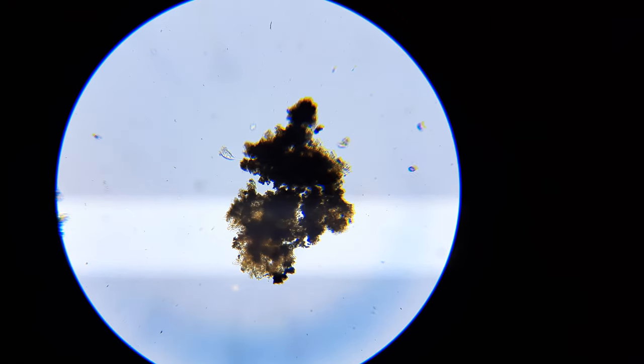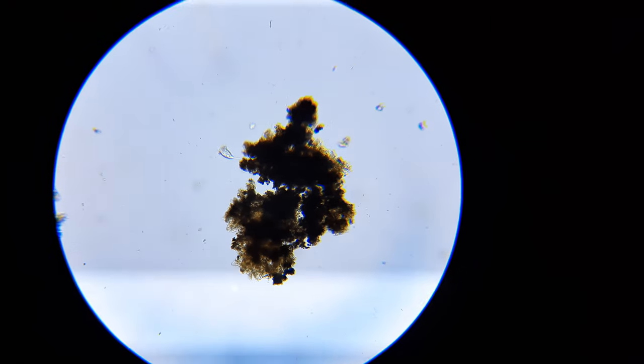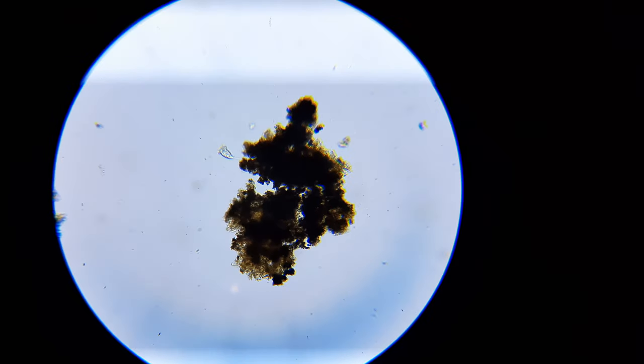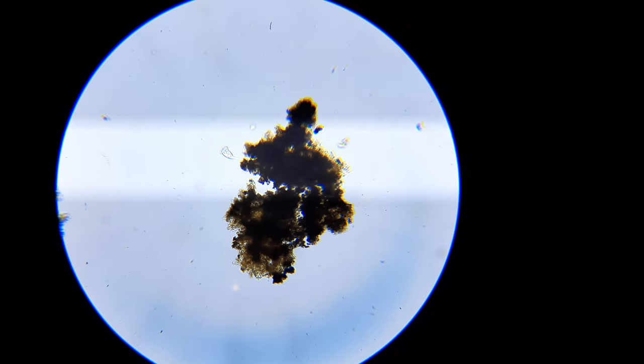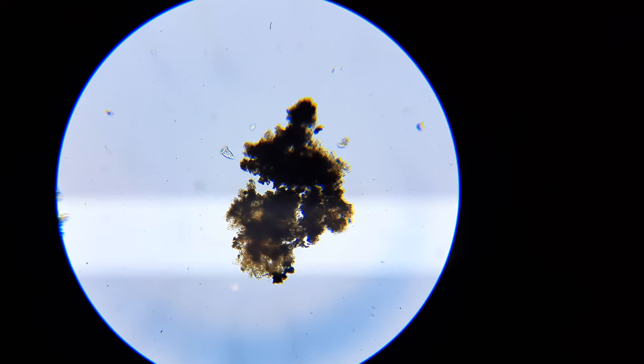Whereas with a regular constant light source, the cilia on the vorticella is basically impossible to see.